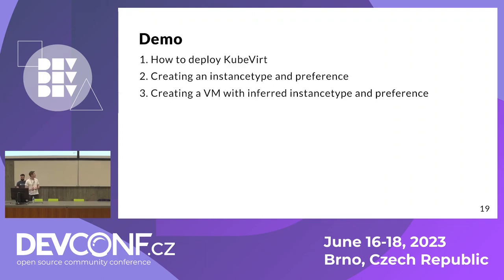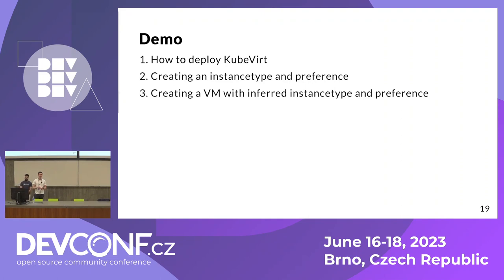Now we will present a short demo of what we were able to achieve. We wanted to make this demo focused on people who already have a running Kubernetes cluster and who wanted to give KubeVirt a try, so you should already be a bit familiar with Kubernetes. The first step will be how to deploy KubeVirt. The second step will be creating an instance type and preference — in this demo we will be creating our own. And the third step will be creating a virtual machine with an instance type and preference.